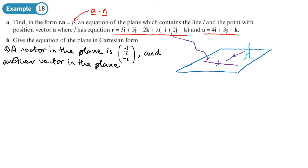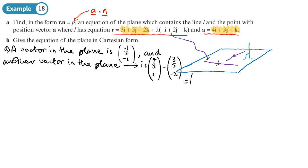To find this other vector in the plane, I'm going to use two points that are in the plane. So let's write this out fully. The second point is 4, 3, 1, minus the first point — any vector parallel to this will do — so 3, 5, minus 2. This gives me a vector in the plane: 1, minus 2, 3. So I now have two vectors in the plane.